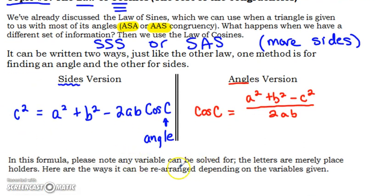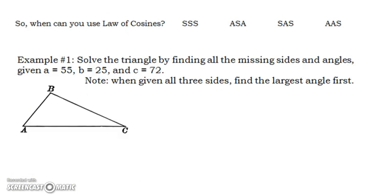As a reminder, any single variable can be solved for. This is more of just a format. The side length you're looking for could have the other two sides and then the angle across from it. So the letters can be rearranged. This is just a template for how we would use this formula.